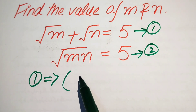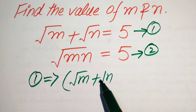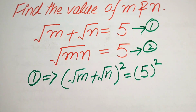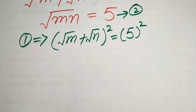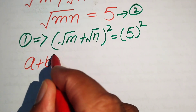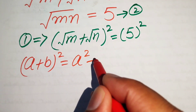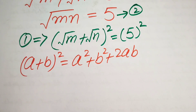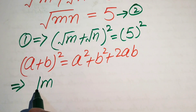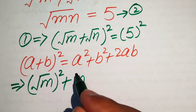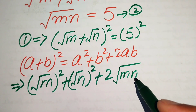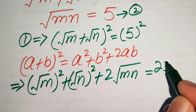We take the square on both sides of equation 1, giving us (√m + √n)² = 5². We apply the identity (a + b)² = a² + b² + 2ab. So we get (√m)² + (√n)² + 2·√m·√n = 25, which simplifies since the squares cancel the radicals.